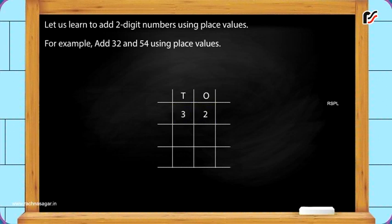In 54, there are five tens and four ones. So, write five under the tens column and four under the ones column. Now, put the plus sign as shown.